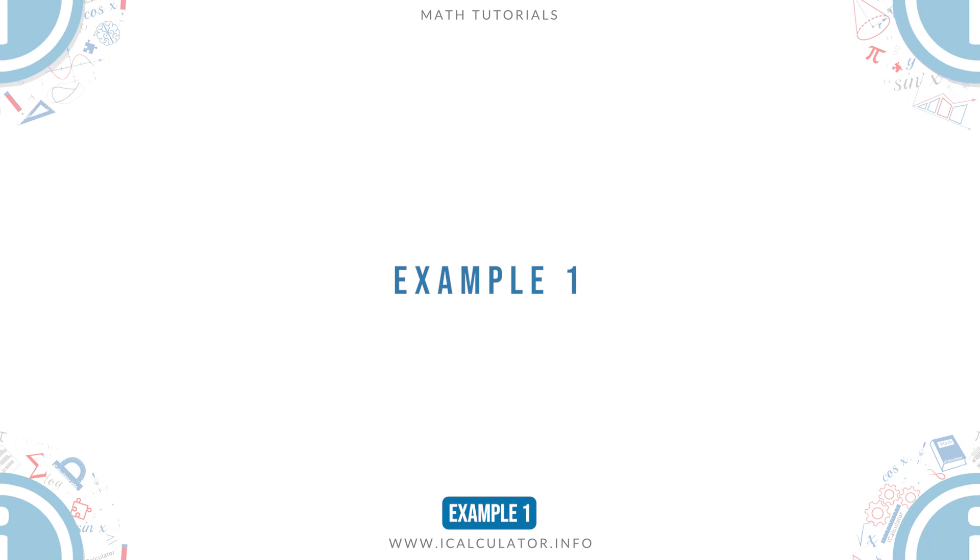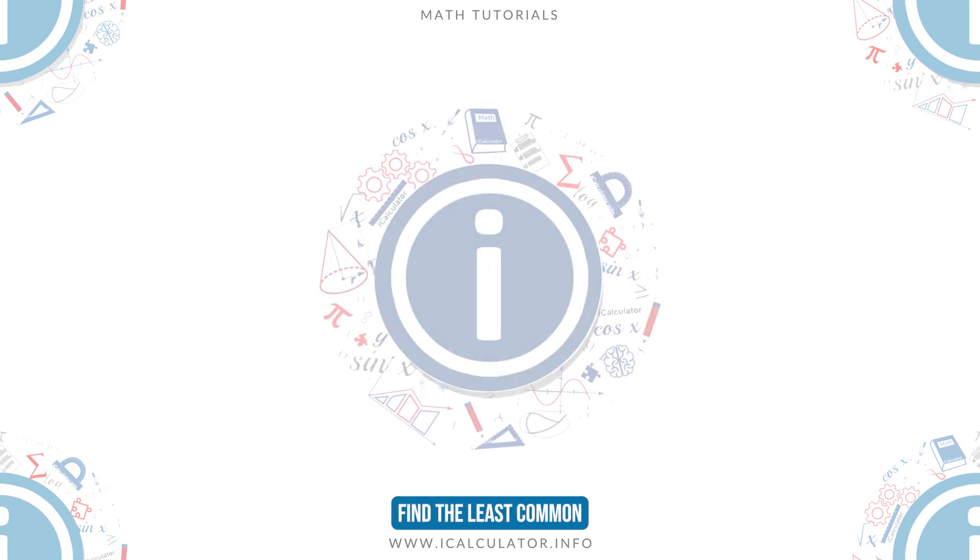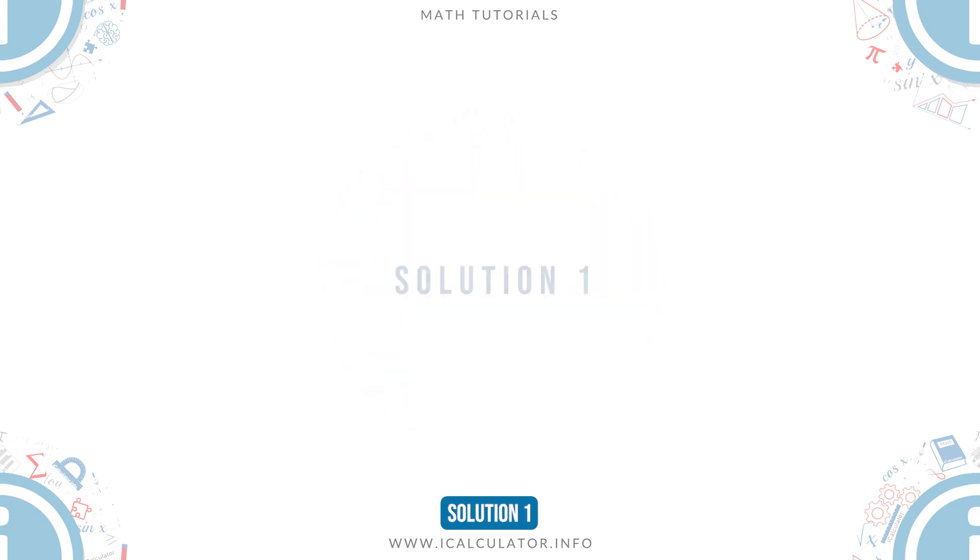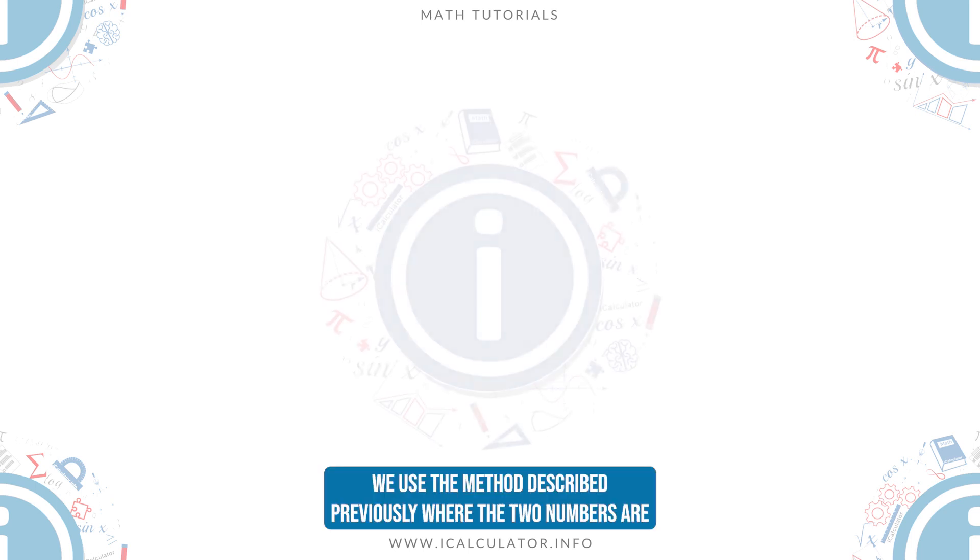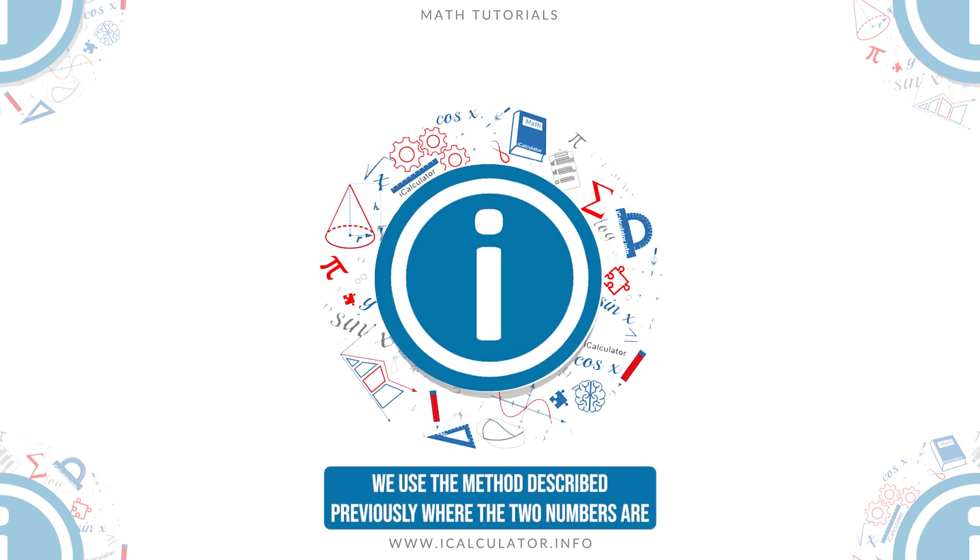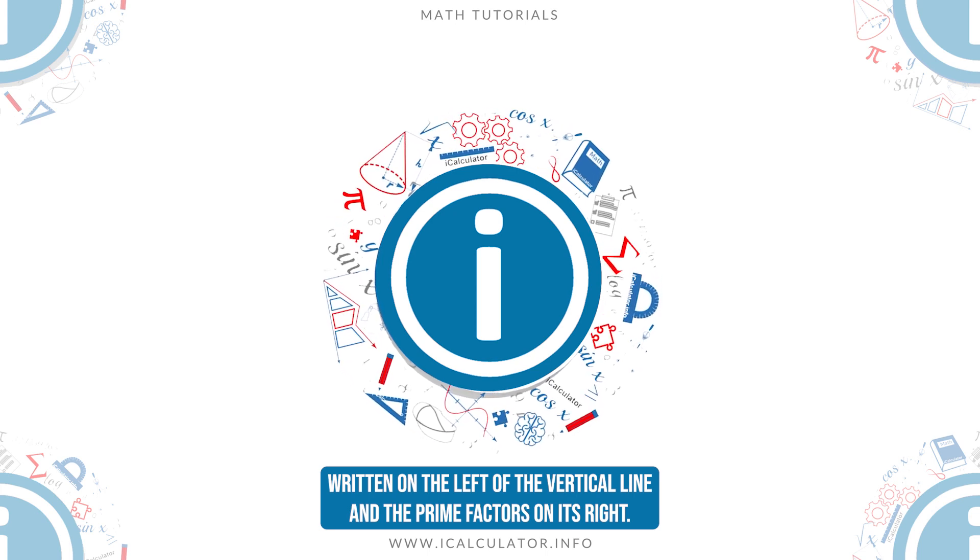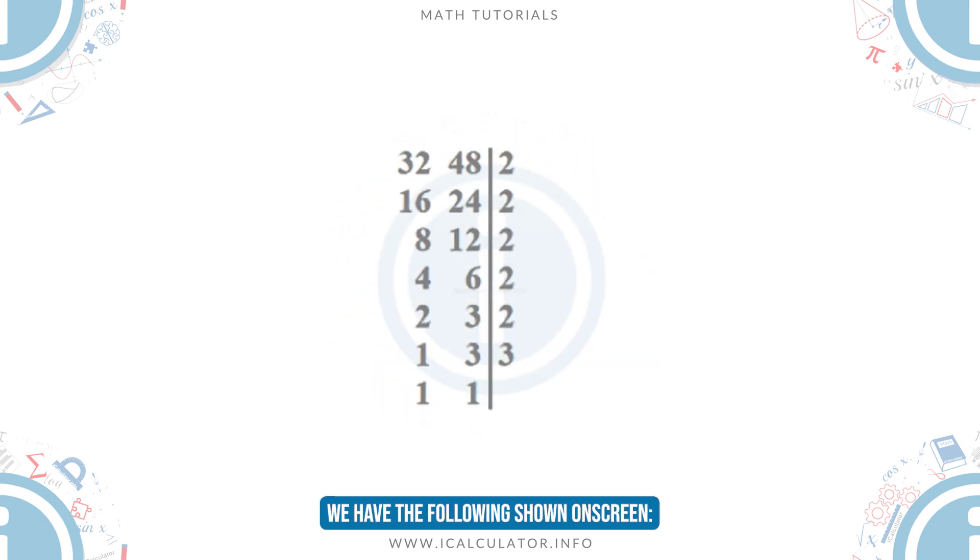Example 1. Find the least common multiple of 32 and 48. Solution 1. We use the method described previously where the two numbers are written on the left of the vertical line and the prime factors on its right. We have the following shown on screen.